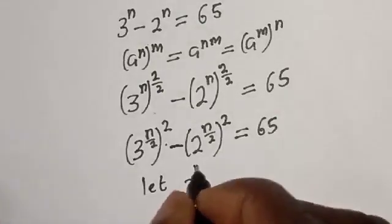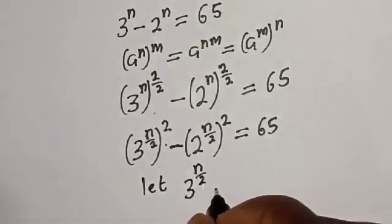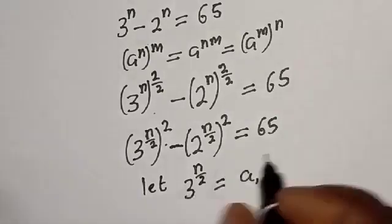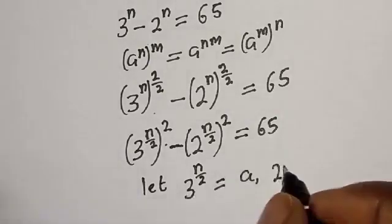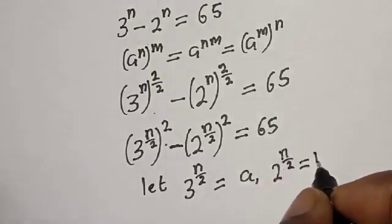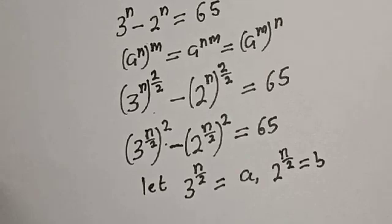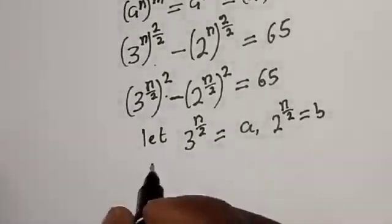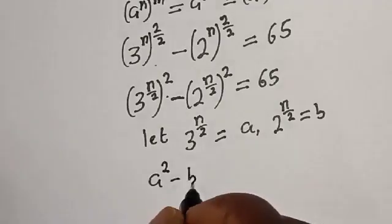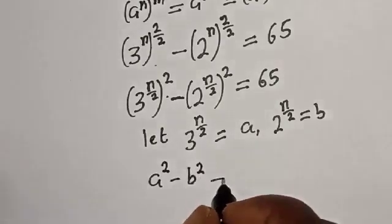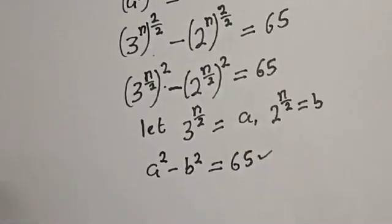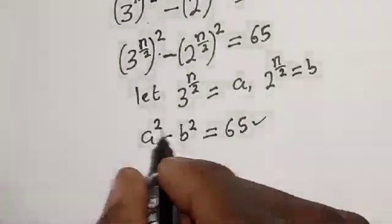Let 3 raised to power (n/2) equal a, and 2 raised to power (n/2) equal b. Then the equation becomes a squared minus b squared, which is equal to 65. This is a difference of two squares.